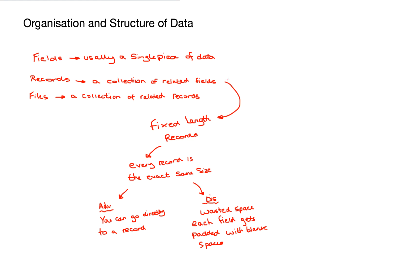So what about variable length records? Well, these are usually used in serial and sequential files, but we'll get onto that in just a second. They accommodate data stored in each field, so this will accommodate for different data types. The advantage here is that there is no wasted space.